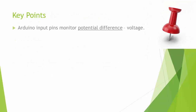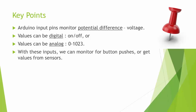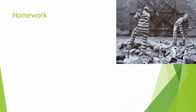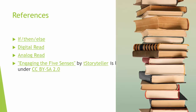The key points from today: Arduino input pins monitor potential difference — voltage. The values that come out can be digital (on/off) or analog (0 to 1023). We can use these inputs to monitor for button pushes or to look at the outputs from given sensors. For homework, be sure to do the Arduino nightlight, and these references may be helpful. Thanks very much, and have a great night.